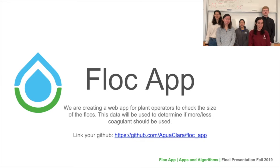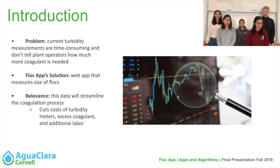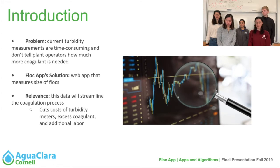Hi, we are FlockApp and we are creating a web app for plant operators to use to check the size of the flocks. The current problem we're trying to solve is that turbidity measurements are time consuming and they don't tell plant operators how much coagulant to add to the water.